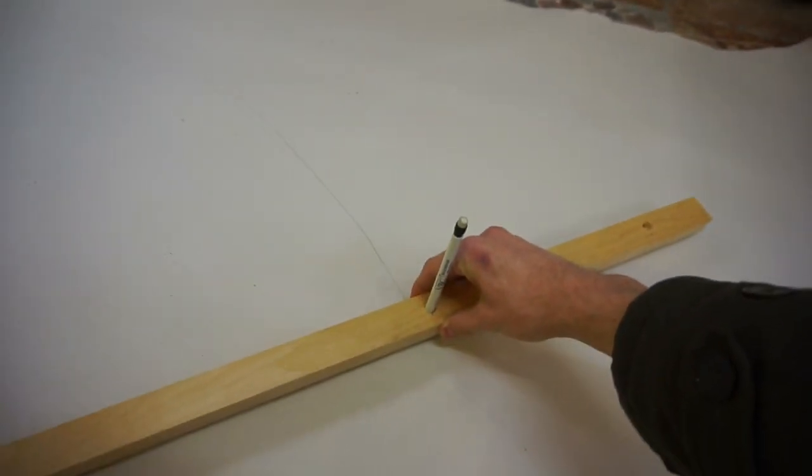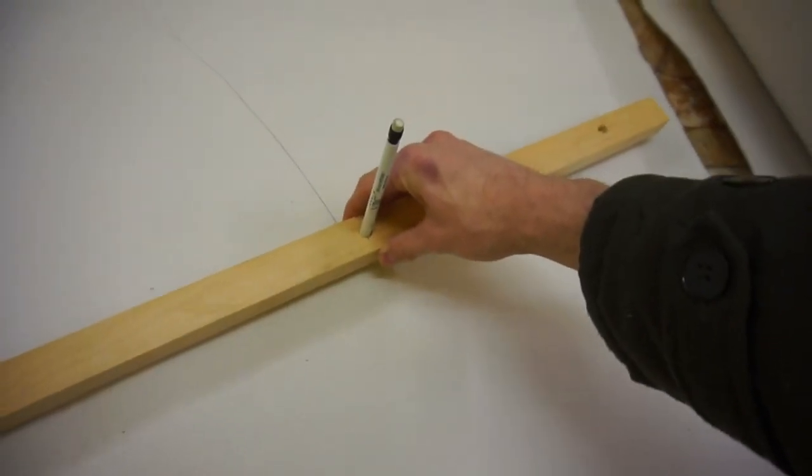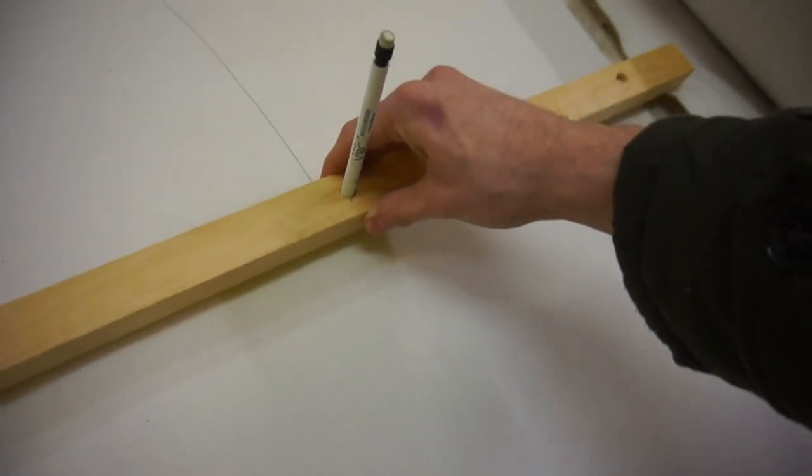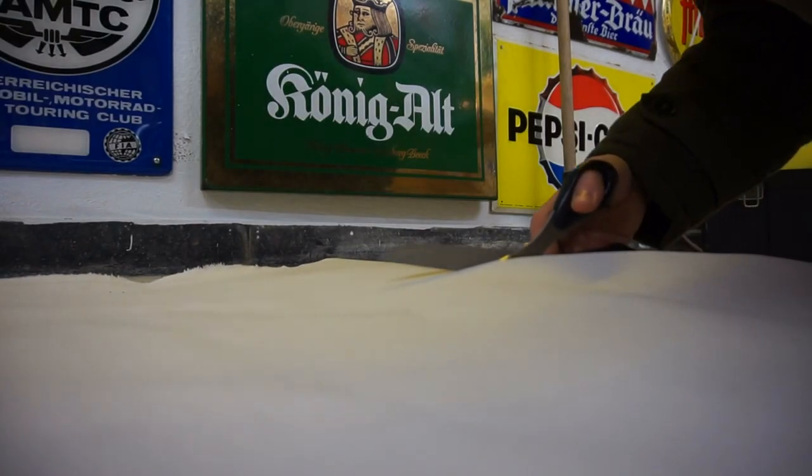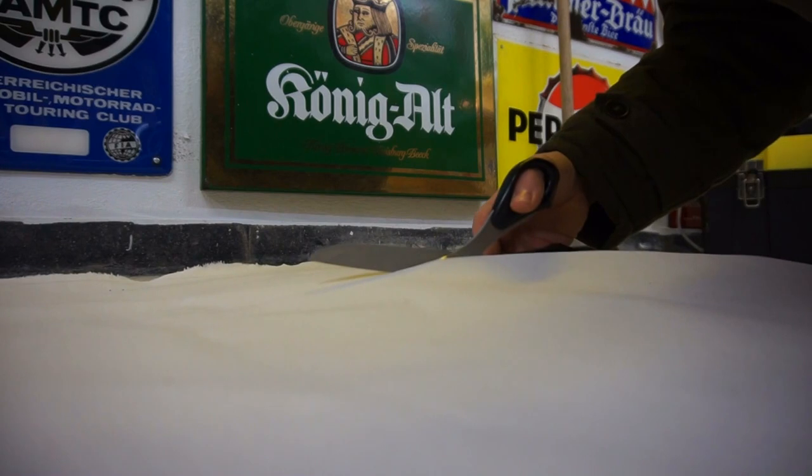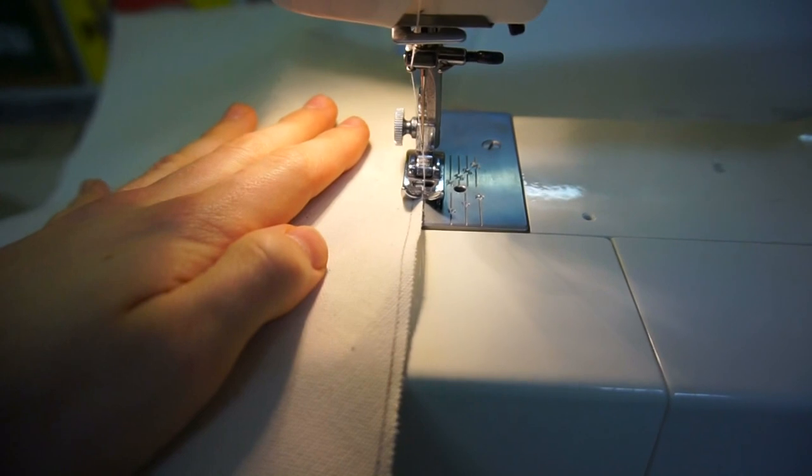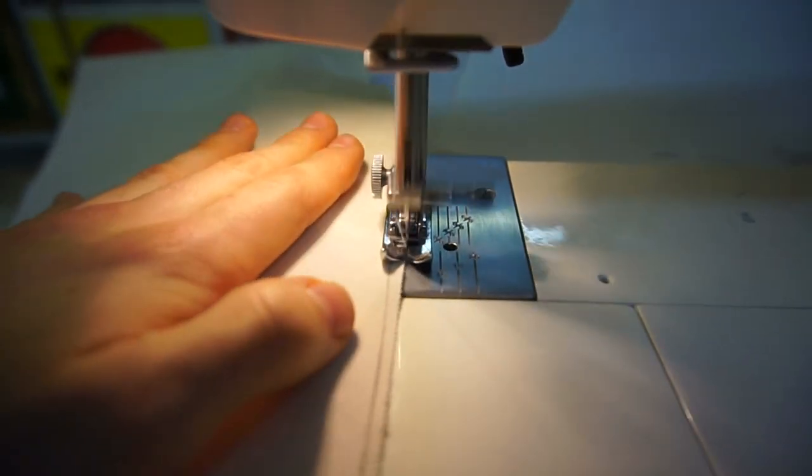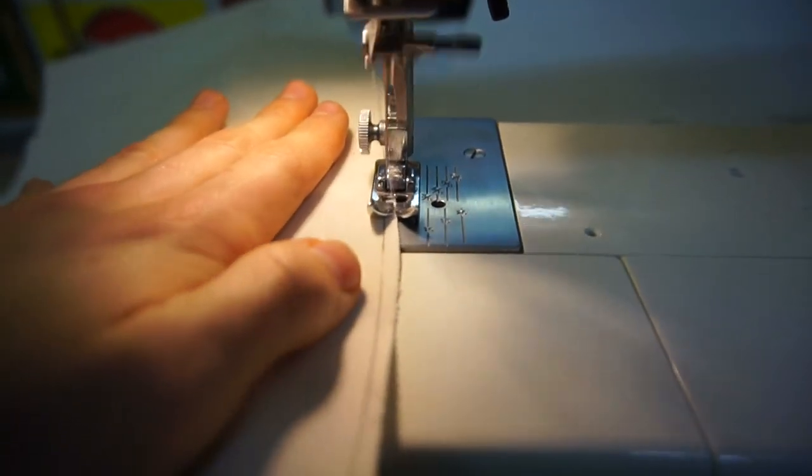So here with the pencil we are doing the inner part of the circle that we will cut out. And as you can see there are two holes in the wood, so there you can also see the outer part. Then we cut both of them out and you are left with a big ring. And this ring will then go again through the sewing machine to make sure that there are no loose ends.